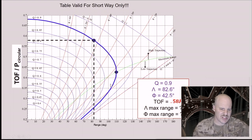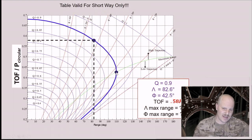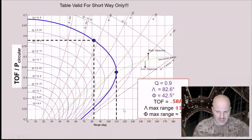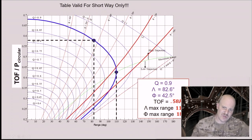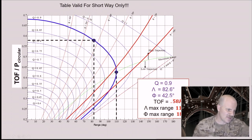Next, I can calculate max range. For that, I look at my green line. The same rocket has a Q of 0.9, which puts me at a specific intersection with the green line. That means the farthest possible target I can hit is 110 degrees away in terms of lambda. For phi max range, I identify two red lines bracketing my max range point — I'm closer to 20 than to 10, so that's approximately 18 degrees. That's how you use the chart.